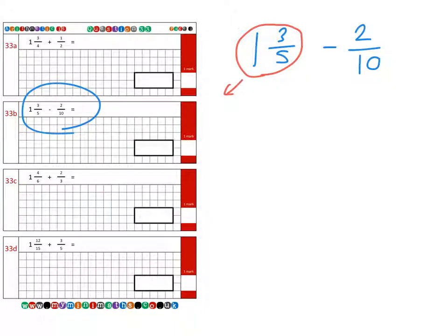The 1 is the same as saying 5 fifths, 5 out of 5, that's one whole pizza. And we're going to add that to the 3 fifths. So we have a total of 8 fifths. And we're going to subtract the 2 tenths.